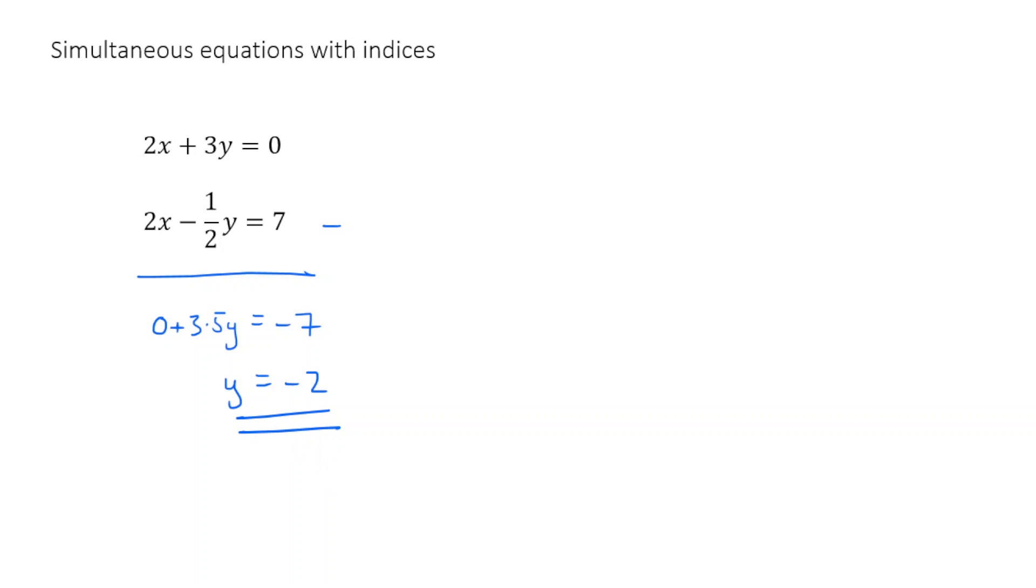And then hopefully we should be able to see by substitution that if y is equal to minus 2, we can substitute it back into one of these equations like this one here. And we're going to get 2x plus 3 times by minus 2 is equal to 0. So 2x minus 6 is equal to 0. So 2x is equal to 6. Or x is equal to 3. So in the end, our two solutions to the set of simultaneous equations is that x is equal to 3 and y is equal to negative 2.